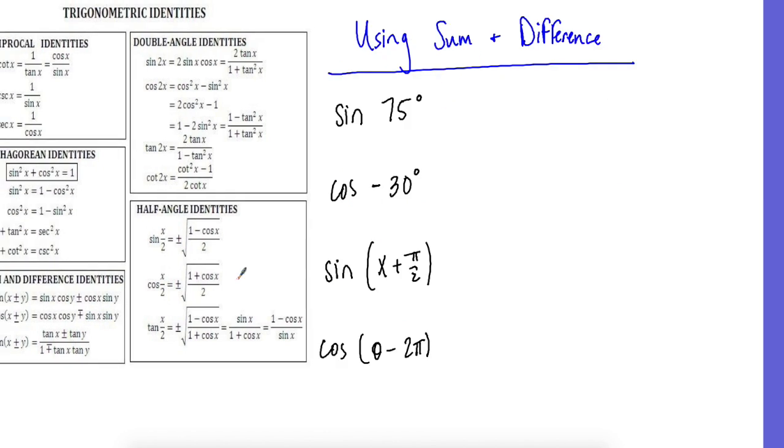All right, using sum and difference, so we're going to be looking down here at sine and cosine. Remember, sine is the same cosine. When it's positive, it's actually negative in the middle, so remember to be wary of that. Sine 75, if we're using the sum, we can say that's really sine 30 plus 45. So if we're looking at sine, we're using plus, so it's going to be plus, so that's going to be sine 30 cosine 45 plus cosine 30 sine 45. That's what you're going to be looking for in that equation.